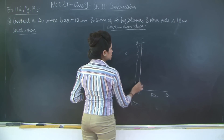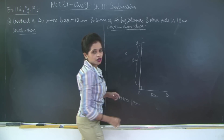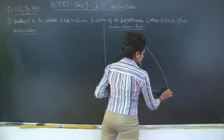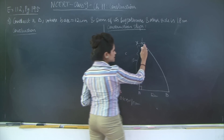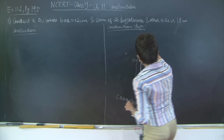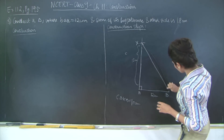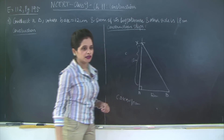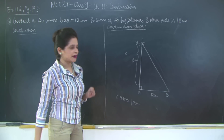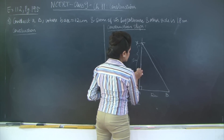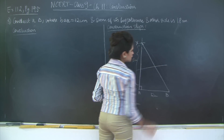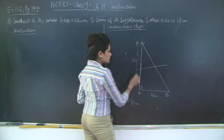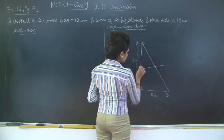Once you draw AX equal to 18 centimeters, you will join point X to B. Then I'm going to draw the perpendicular bisector of XB such that this perpendicular bisector cuts XA at point C.